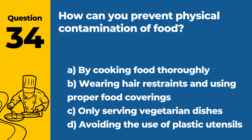Question 34. How can you prevent physical contamination of food? a. By cooking food thoroughly. b. Wearing hair restraints and using proper food coverings. c. Only serving vegetarian dishes. d. Avoiding the use of plastic utensils. Answer b. Wearing hair restraints and using proper food coverings. To prevent physical contamination of food, it's important to keep foreign objects out of food.